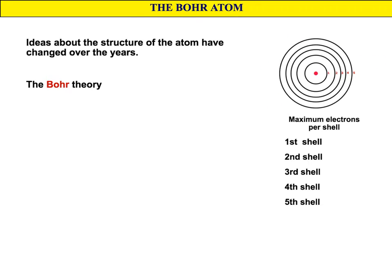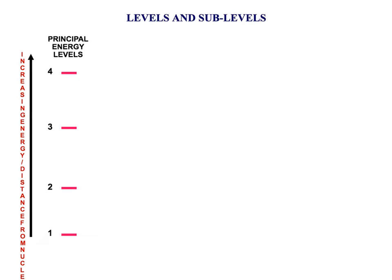In the Bohr model, you would fit 2 electrons in the first shell, 8 electrons in the second shell, 18 in the third shell and so on. The Bohr model is really great but it doesn't explain everything, so the model we look at now at A-level takes it a little bit further.